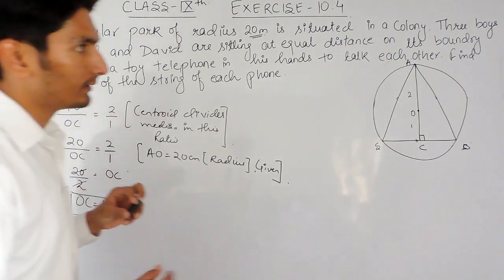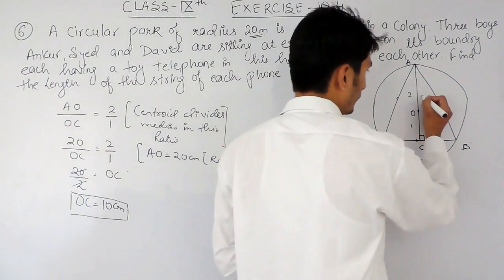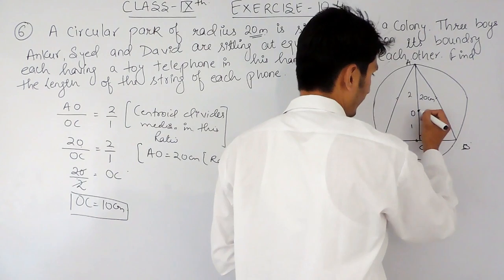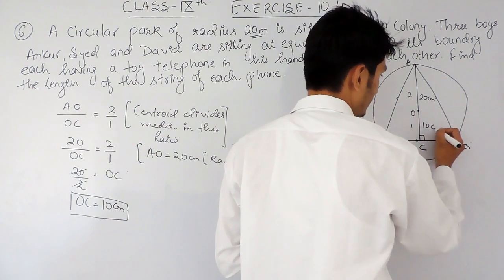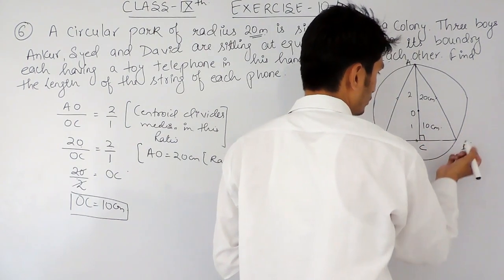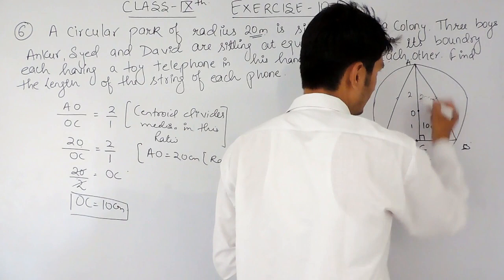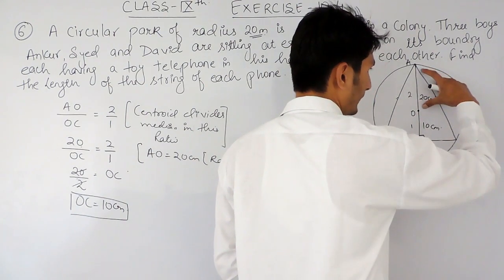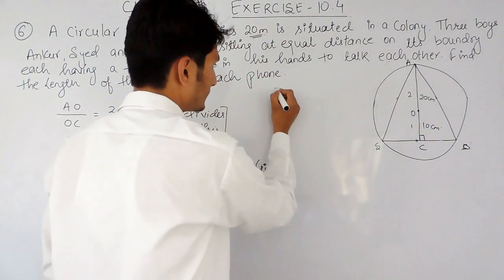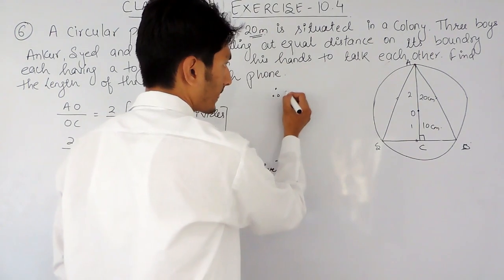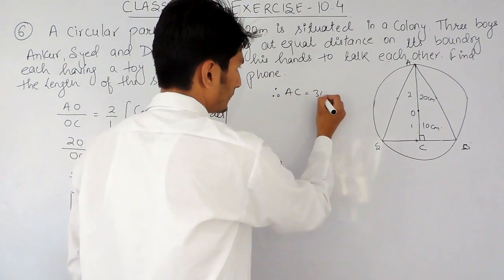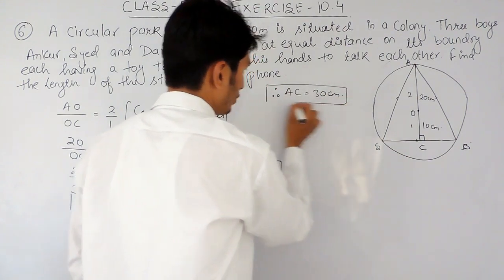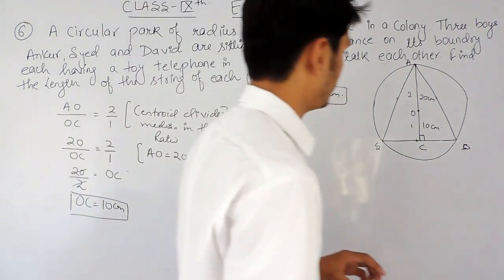So the value of OC is 10 centimeters. Therefore the value of AC — this complete median line — will be 20 plus 10, that is 30 centimeters. So the value of AC is 30 centimeters.